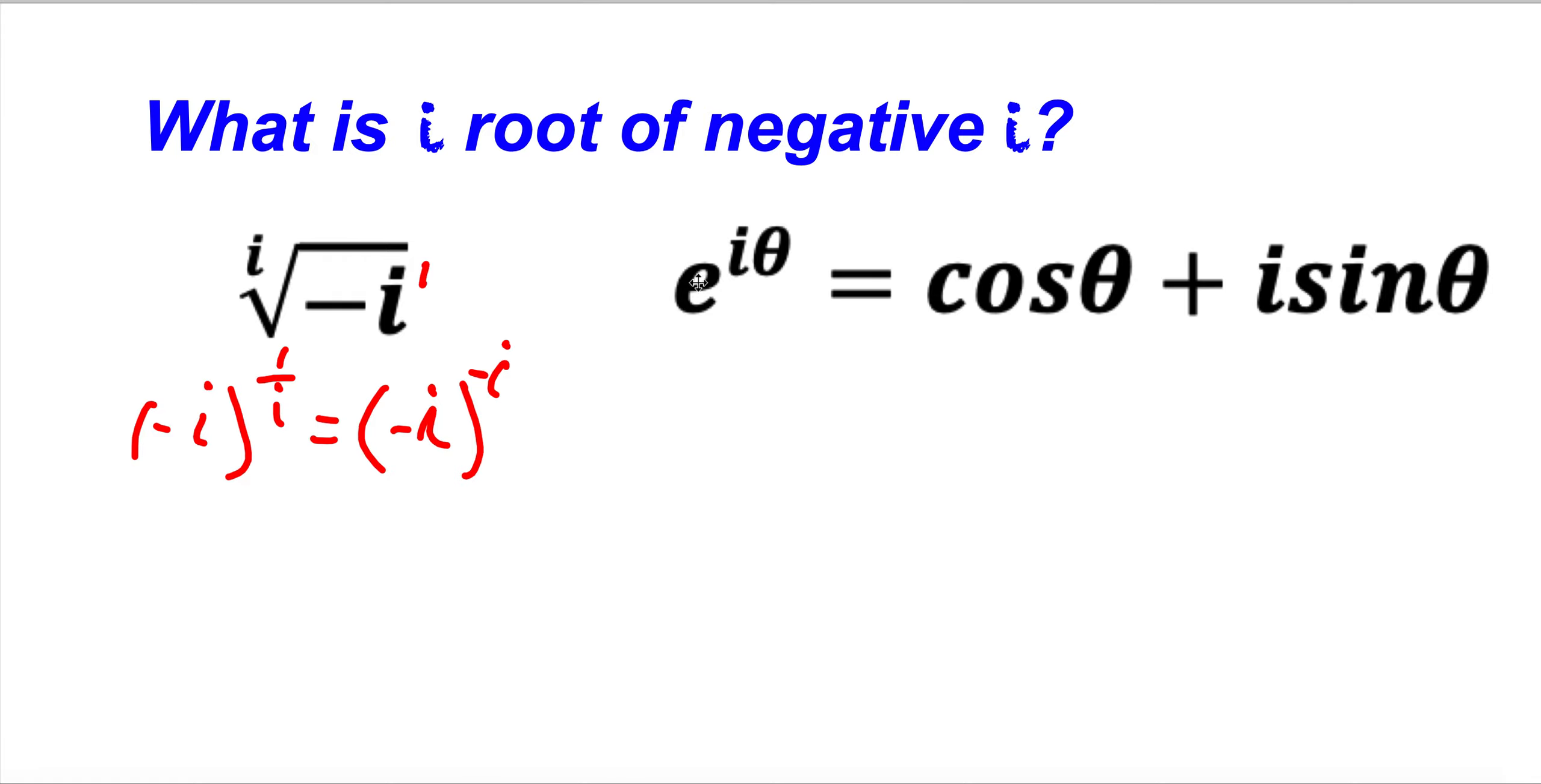That is e to the i exponent theta is equal with cosine theta plus i sine theta. If we have a theta that is 270 degrees, respectively 2 pi over 3, and if we are plugging here, e to the i exponent 2 pi over 3 is going to be equal with cosine...